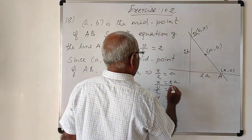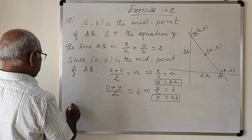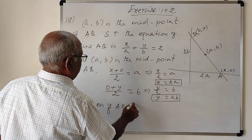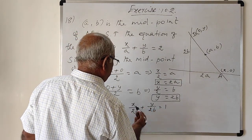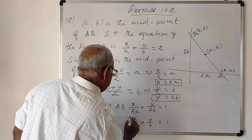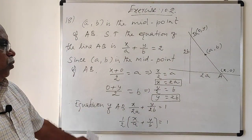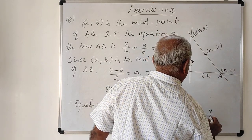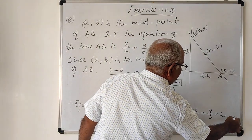Using the intercept form of the equation of a line, the equation is x/(2a) + y/(2b) = 1. Taking (1/2) as a common factor on the left-hand side and multiplying both sides by 2, we get x/a + y/b = 2. This is the required answer — we have proved it.